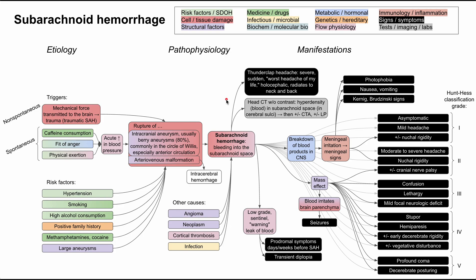For diagnostics, the first test is a head CT without contrast, which allows you to see a hyperdensity in the subarachnoid space — that hyperdensity is the blood, sometimes visible in the cerebral sulci. Once confirmed, CT angiography can identify the intracranial aneurysm or arteriovenous malformation that caused the bleed in spontaneous cases. If the CT is inconclusive, a lumbar puncture allows you to sample the CSF and look for blood or blood products. This video covered subarachnoid hemorrhage; additional videos will cover intracerebral hemorrhage and ischemic stroke.